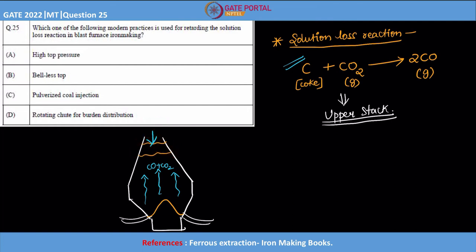But this reaction, if it is forming in the upper stack region, the topmost part of the blast furnace, what is happening? The CO will be formed, but the amount of CO that is escaping out will be very, very high.